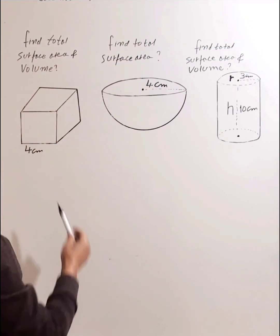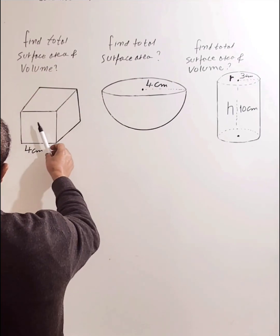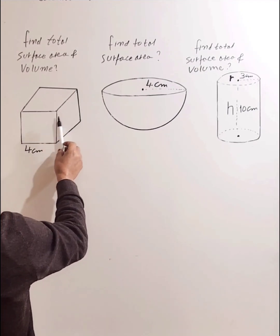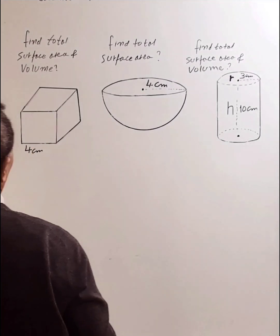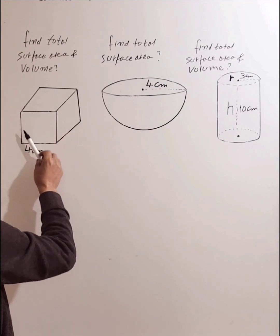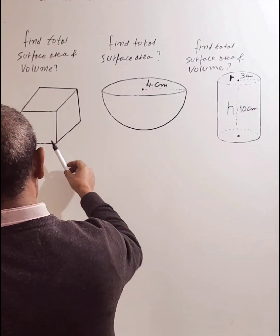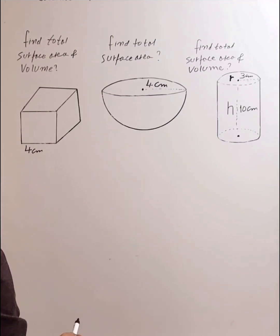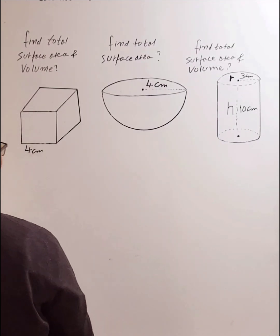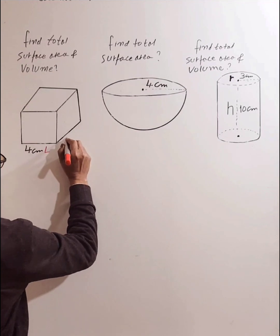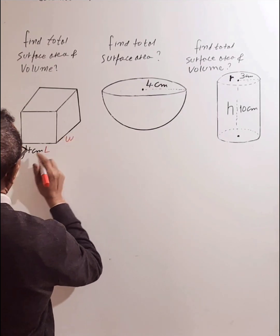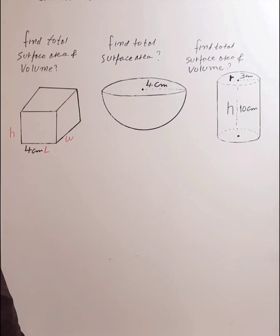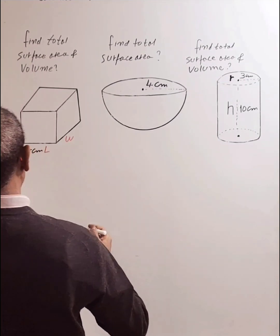Let's first find the surface area of the cube. The total surface area of a cube is the sum of the area of all six faces — three visible and three hidden. All sides of the cube are equal in length: the length is 4 cm, the width is 4 cm, and the height is 4 cm.